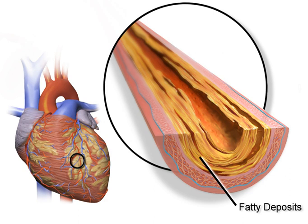A common symptom is chest pain or discomfort which may travel into the shoulder, arm, back, neck, or jaw. Occasionally it may feel like heartburn. Usually symptoms occur with exercise or emotional stress, last less than a few minutes, and improve with rest. Shortness of breath may also occur and sometimes no symptoms are present. In many cases, the first sign is a heart attack.